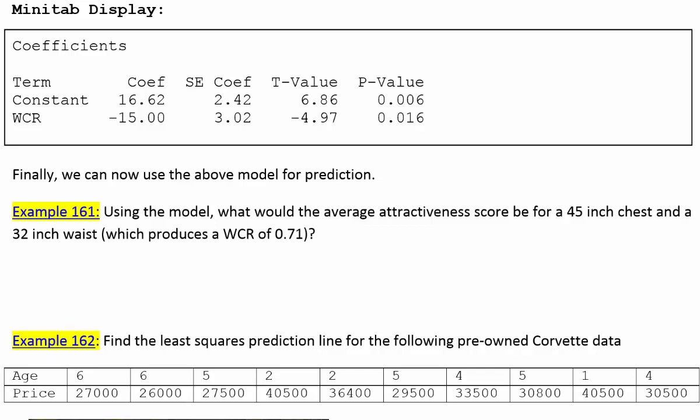Example 161, Tech. Using the model, what would the average attractiveness score be for a 45-inch chest and a 32-inch waist, which produces a waist-to-chest ratio of 0.71?